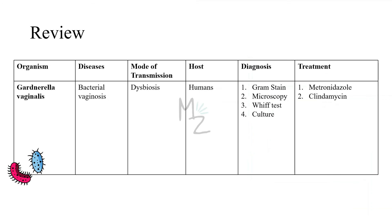Let's review everything in this short table. The organism we discussed today is Gardnerella vaginalis, responsible for causing bacterial vaginosis, also termed non-specific bacterial vaginitis. Its mode of transmission involves dysbiosis with risk factors including low estrogen levels, use of IUDs, smoking, obesity, and recent antibiotic use or infection. Human beings are its hosts. Diagnosis is based on gram staining, microscopy, whiff test, and culture. It is treated with metronidazole and clindamycin.